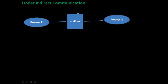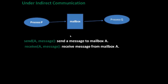In indirect communication, the mailbox is used. Suppose process P has to send a message to process Q — process P will send that message to the mailbox, and process Q will receive that message from the mailbox. The send and receive primitives are defined as: send(A, message) means send a message to mailbox A, and receive(A, message) means receive a message from mailbox A.